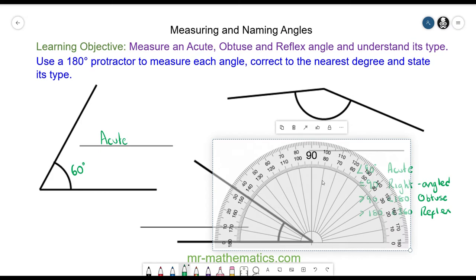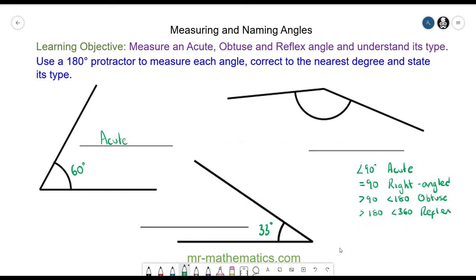So we line up our crosshairs so they are on the intersection of the two lines. This time we are going to use the top scale, so this is the zero and we are going to go in a clockwise direction. So we have zero to 10 to 20 to 30 to 33 degrees, and we call this angle again an acute angle.